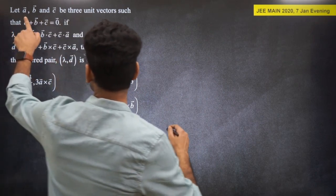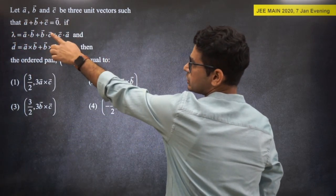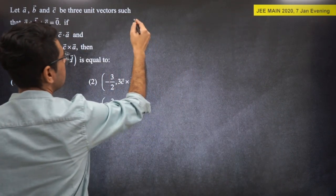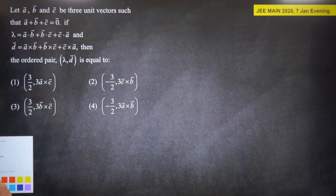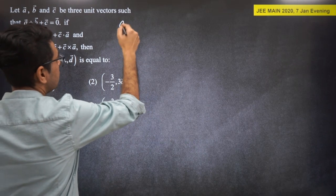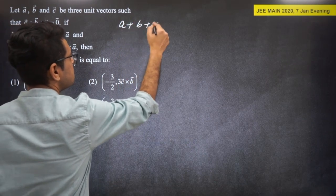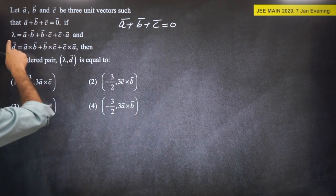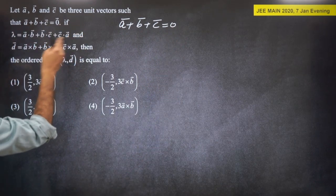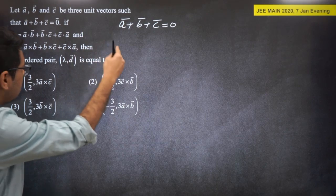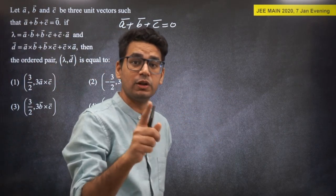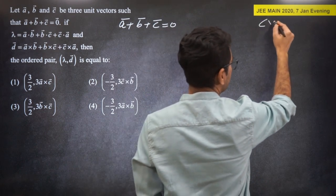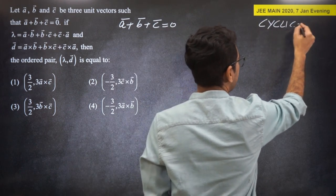A, B, C are 3 unit vectors such that A + B + C = 0. We are given lambda = A·B + B·C + C·A, and also asked about A×B + B×C + C×A. Notice the cyclic pattern throughout this question — all information follows cyclic order.